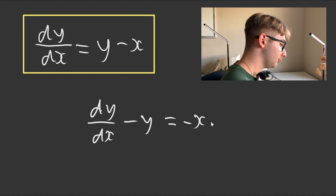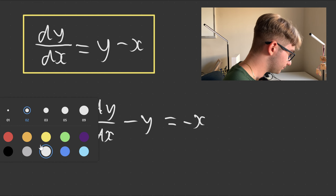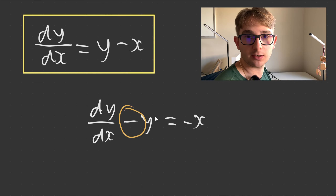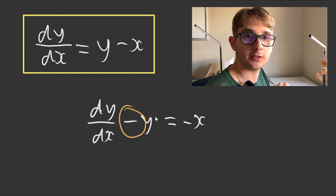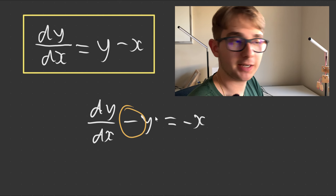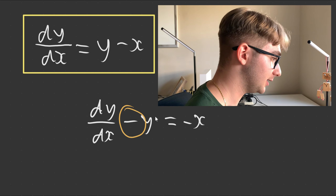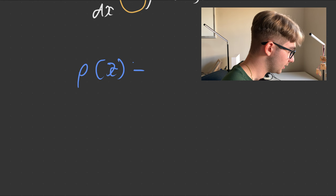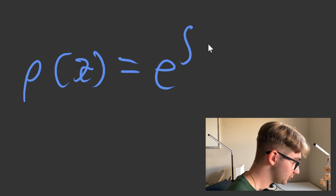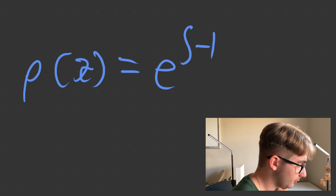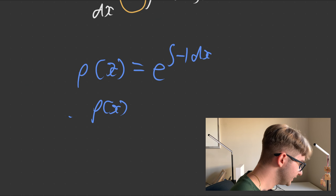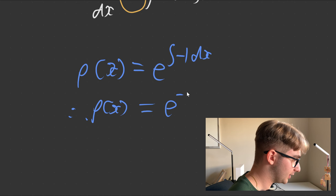What exactly do we do? We need to look at this minus here — the function in front of y is negative 1. We need to use this negative 1 in some function that we can multiply both sides by in order to get the result of a product rule. If you've already studied differential equations, you'll know we need to multiply both sides by p(x), where p(x) equals e to the power of the integral of whatever's in front of y, which is negative 1, with respect to x. So p(x) is therefore equal to e to the power of negative x.